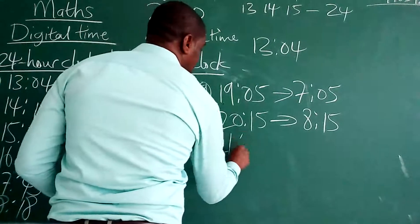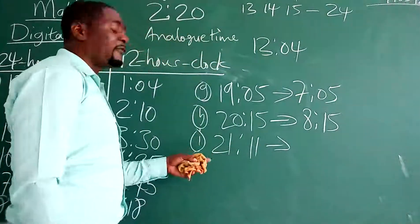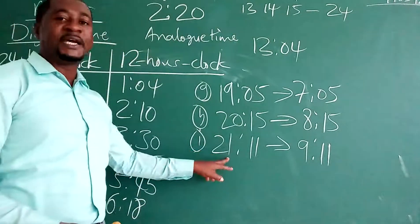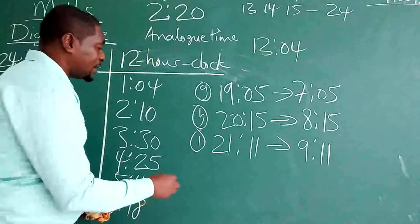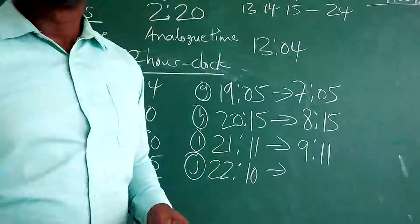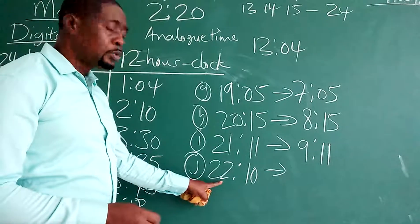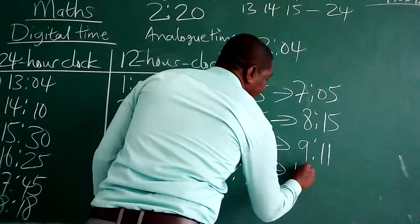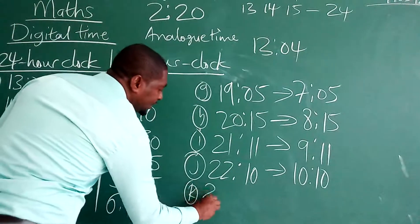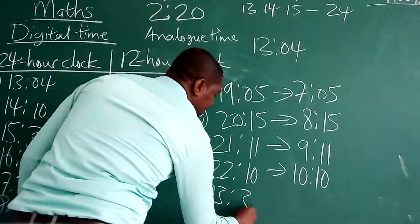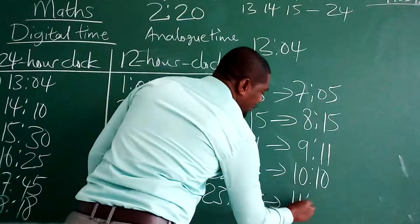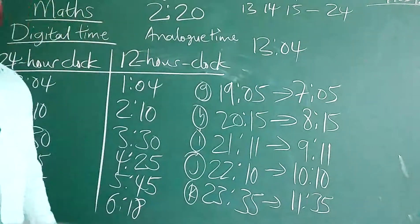If you have 19:05, removing 12 from 19 you get 7, so it will be 7:05 on the 12-hour clock. If you have 21:11, removing 12 from 21 you get 9, so it will be 9:11. If you have 22:10, removing 12 from 22 you get 10, so it will be 10:10. If you have 23:35, removing 12 from 23 you get 11, so it will be 11:35 on the 12-hour clock.